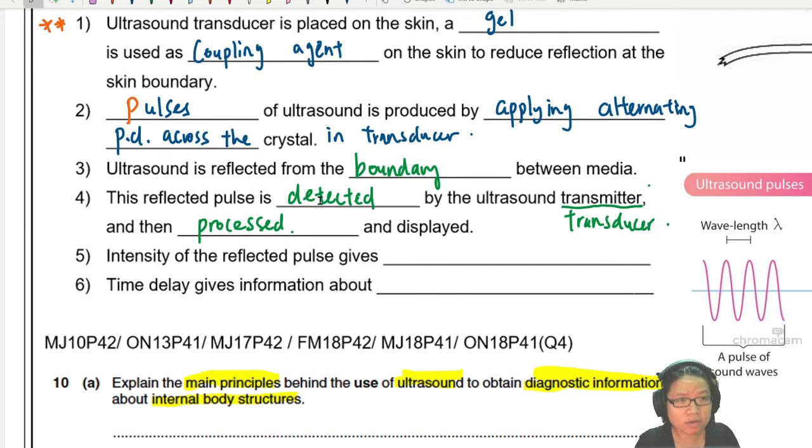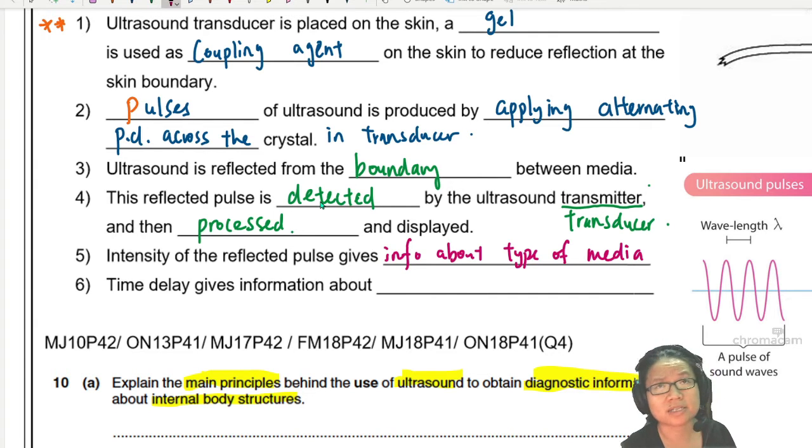But what about the reflected pulse that gives us information about what we are scanning? For example, I want to scan the baby and then I want to know whether there's fluid in the baby's lungs. I want to know whether the kidneys are functioning. So the intensity of the reflected pulse will give us information about all those things. So it will give information about the type of media. We use media as a plural term for medium. But what I'm trying to say is that in the ultrasound, we can detect whether the baby has club foot, whether the baby has Down syndrome, whether the baby has a kidney problem or the lungs are underdeveloped. We can tell all of this in the ultrasound.